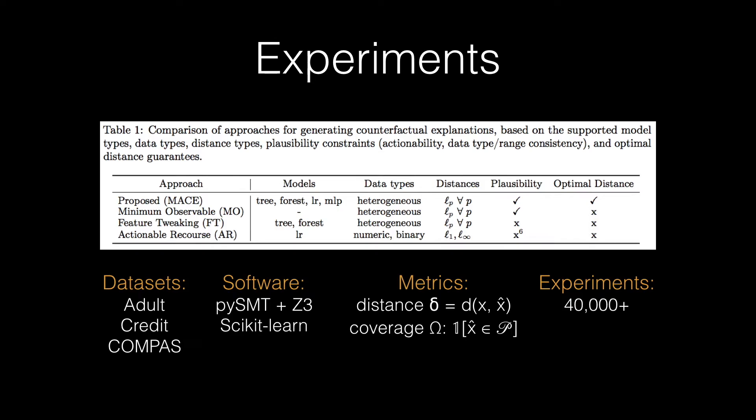We compare our approach MACE against the aforementioned methods in the literature. For each combination of approach, model, dataset, and distance, we generate the nearest counterfactual explanations for a held-out set of 500 instances classified as negative by the corresponding model.